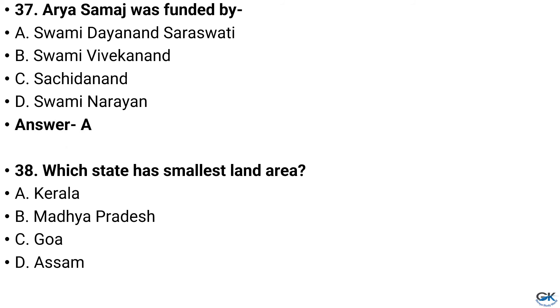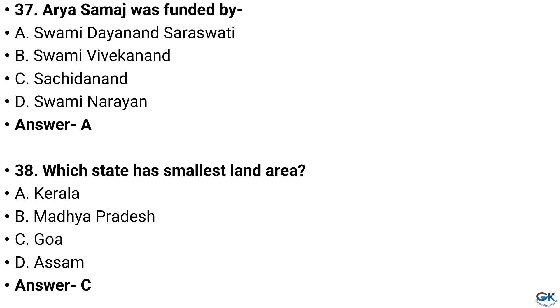Question number 38. Which state has the smallest land area? Option A: Kerala, Option B: Madhya Pradesh, Option C: Goa, Option D: Assam. And the answer is Option C: Goa.